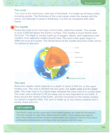The mantle: Below the crust is the next layer of the Earth, called the mantle. The mantle is up to 3,000 kilometers below the Earth's surface. The mantle is much thicker than the crust. This layer is mostly made up of oxygen, silicon, and magnesium and contains both solid and melted, that is liquid, rock. The rock in the upper region is stiffer because it is cooler. The temperature of the mantle becomes hotter when it is closest to the core.